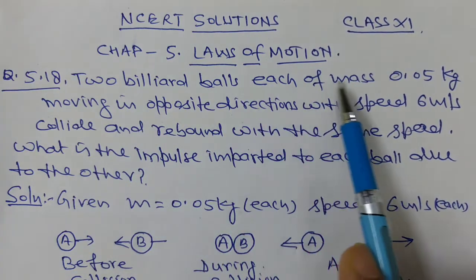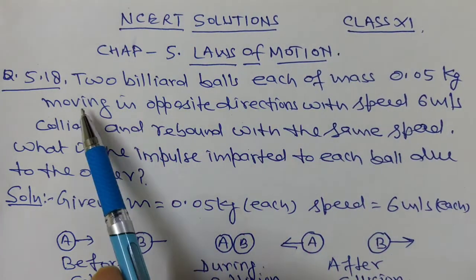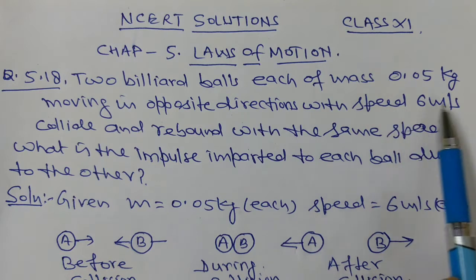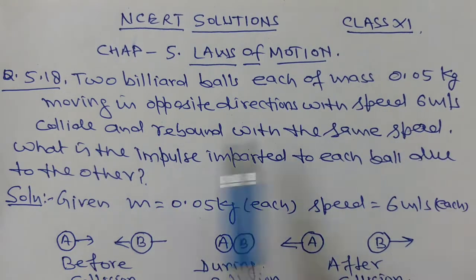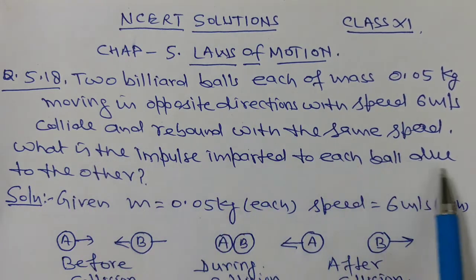Two billiard balls each of mass 0.05 kg moving in opposite direction with speed 6 m per second collide and rebound with the same speed. What is the impulse imparted to each ball due to the other?